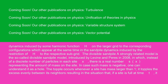The divisible sandpile: a strongly related model is the so-called divisible sandpile model, introduced by Levine and Peres in 2008, in which instead of a discrete number of particles in each site x, there is a real number s(x) representing the amount of mass on the site. In case such mass is negative, one can understand it as a hole. The topple occurs whenever a site has mass larger than one; it topples the excess evenly between its neighbors, resulting in the situation that if a site is full at time t, it will be full for all later times.